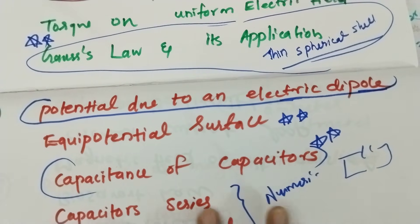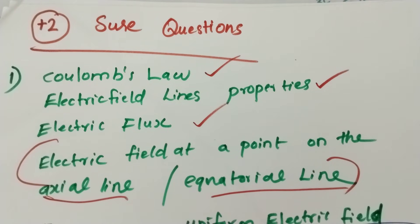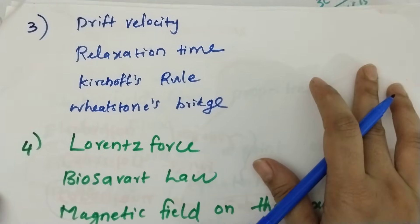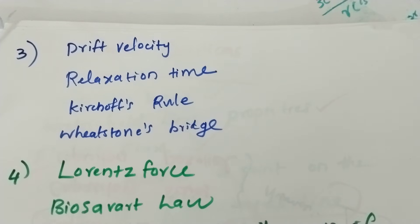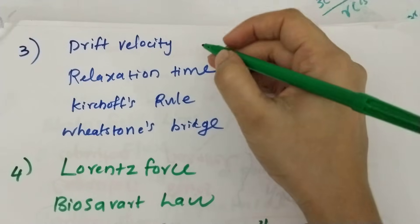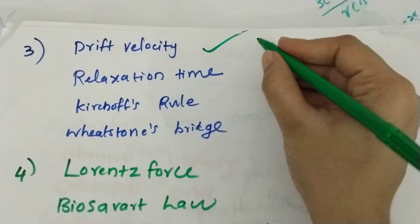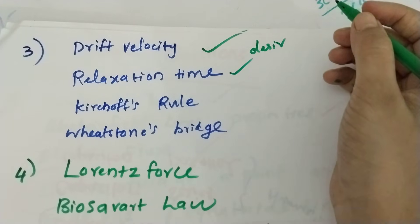That is what I expect to see in the third chapter. I am very focused on the chance of capacitors in this video. In the third chapter, I focus on drift velocity and derivation — what is the definition of drift velocity? Relaxation time, definition.